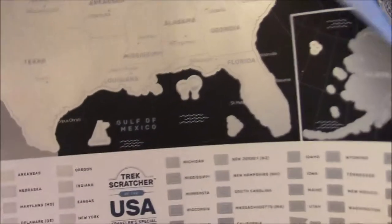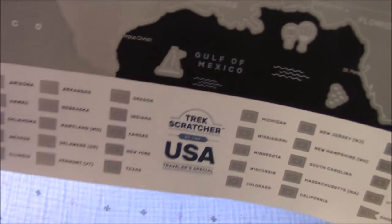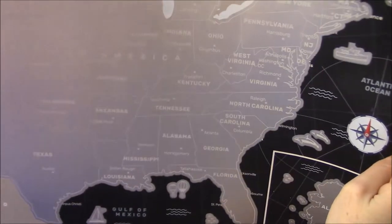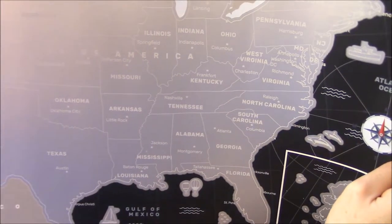It's got the key, all the little states at the bottom you scratch off. It's got some boats and hot air balloons and dolphins out in the water, some fish and some airplanes. That's cute, I like that.